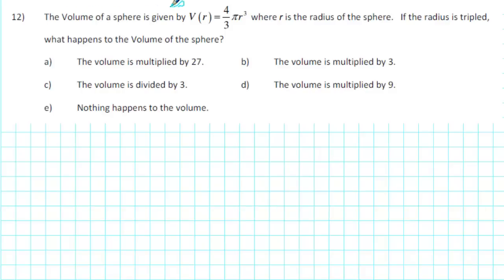The volume of a sphere is given by V(r) = (4/3)πr³, where r is the radius of the sphere. If the radius is tripled, what happens to the volume of the sphere?